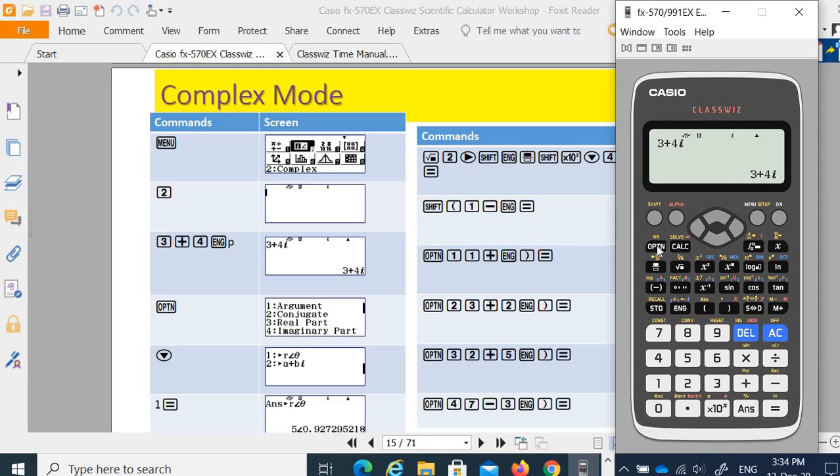Then to do the complex operations, we press option. Here it will let you find the argument, conjugate, real part, imaginary part. It converts between r theta to the form of a plus bi, or a plus bi to the form of r theta.